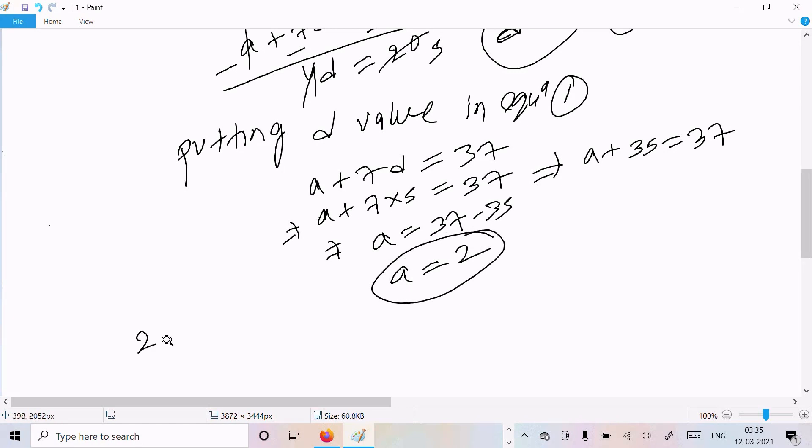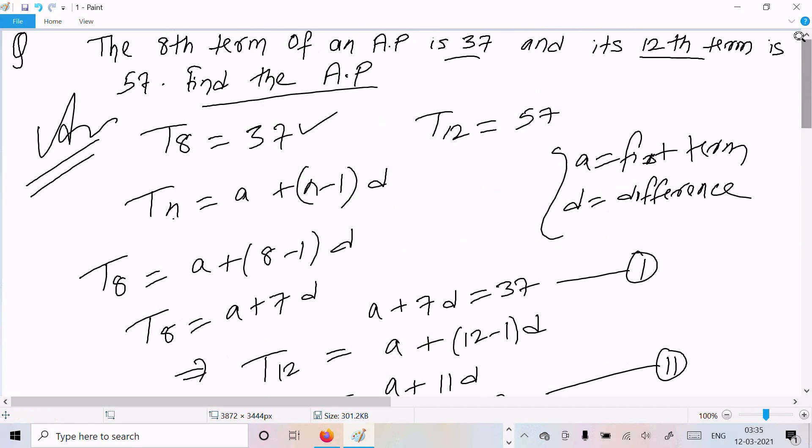Now we calculated first term is 2 and difference is 5. So 2 plus 5, that comes 7. 7 plus 5, 12. 12 plus 5, 17. Like this, that continues. So this is the way we can find the AP.